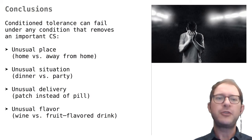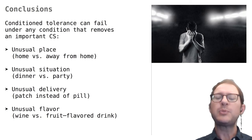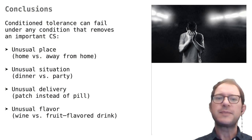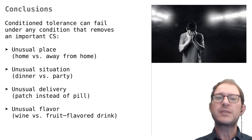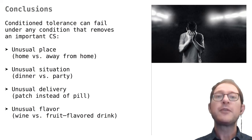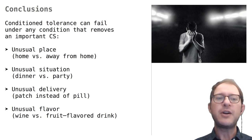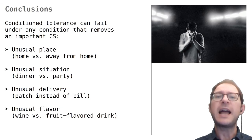As in regular Pavlovian conditioning, even in conditioning of responses to drugs, the brain uses all available information to predict drug effects. This means the brain can fail to predict drug delivery for any number of reasons — the drug could be taken in an unusual place, situation, or in an unusual way. There have been reports of overdose from prescription opioids simply because the patient switched from a pill to a patch. Flavors can also be important cues: severe alcohol intoxication occurred when fruit-flavored alcoholic beverages were introduced to the market, as some researchers speculate the unusual flavors prevented the brain from recognizing that alcohol was being consumed.